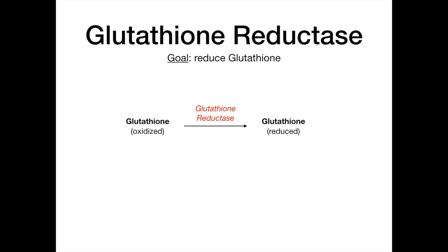Here's what you need to know about the glutathione reductase pathway. You start with oxidized glutathione—it's existing in an oxidized form, but the body needs it in its reduced form for normal physiologic biochemistry. The enzyme that reduces oxidized glutathione to reduced glutathione is glutathione reductase. It's once glutathione is in its reduced form that it can carry out its true biochemical purpose: detoxifying the body against free radicals and peroxides.